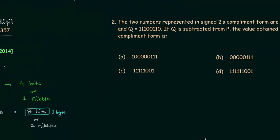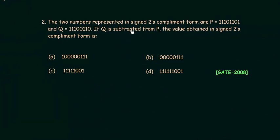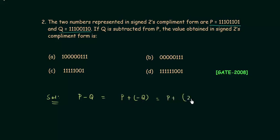Now we move to the second problem. Two numbers represented in signed two's complement form are p and q. If q is subtracted from p, we write this as p plus negative q. Negative q is nothing but the two's complement of q. So find the two's complement of q, add it to p to get the answer. If there is any overflow, neglect it, because in two's complement representation we always discard the carry.